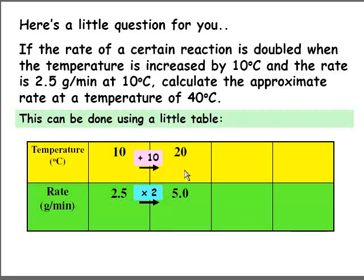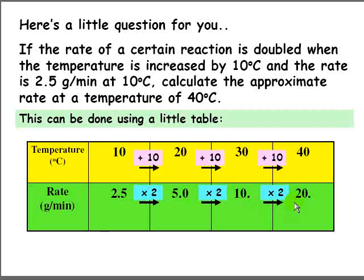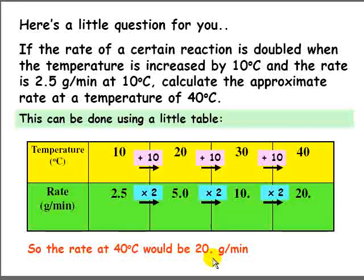If we increase the temperature by another 10 degrees to 30 degrees, the rate doubles again to 10 grams per minute. Bringing the temperature up to 40 degrees adds another 10 degrees, doubling the rate again. So 10 times 2 is 20. Therefore, the rate at 40 degrees would be 20 grams per minute.